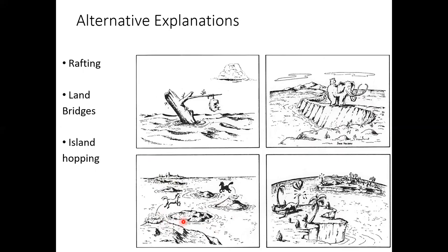Then there was island hopping, which actually does make sense with what we know about plate tectonics. There's a green turtle that swims from an island in the middle of the Atlantic to the beaches of South America to lay its eggs, and the hatchlings eventually swim back to that island. It may be that the distances started increasing incrementally over millions of years — those turtles just swam a little bit further each generation.